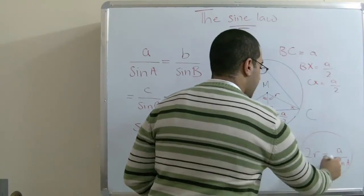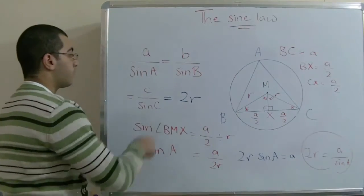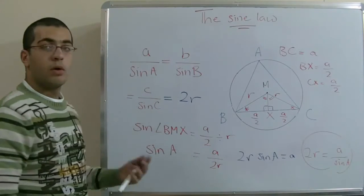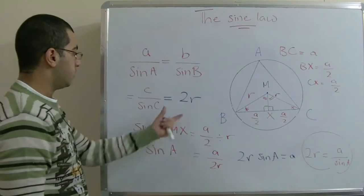And as a over sine A equals b over sine B equals c over sine C, the whole sine law will equal 2R.